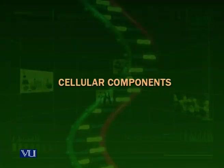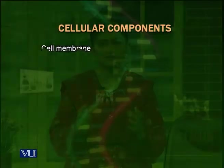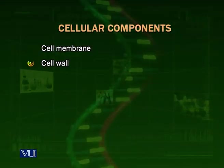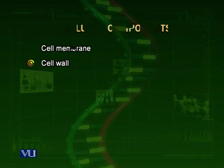Now we are going to talk about cellular components. Cells consist of many components. Most cells are covered by a membrane called the plasma membrane or cell membrane, which protects the internal parts of the cell. Plant cells, fungal cells, and prokaryotic cells also have another layer outside the cell membrane called the cell wall, which is external to their cell membrane.